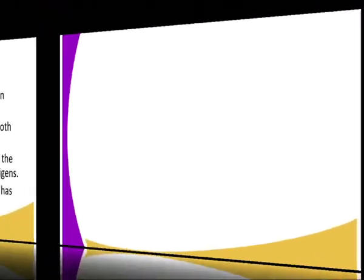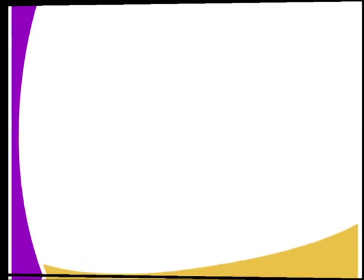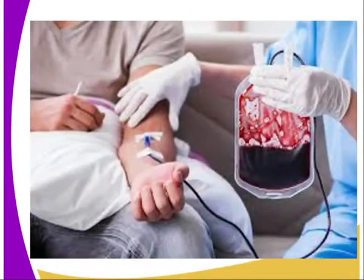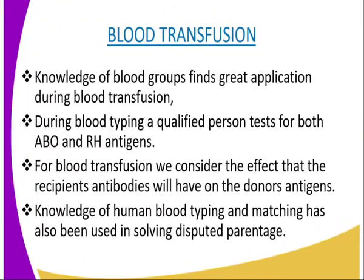Blood group O is referred to as the universal donor, and blood group AB is referred to as the universal recipient. That means blood group AB can receive blood from all blood groups, and blood group O can donate blood to all other blood groups. That is why they are referred to as universal donors.